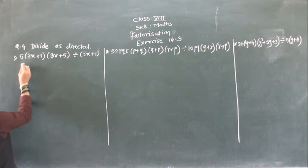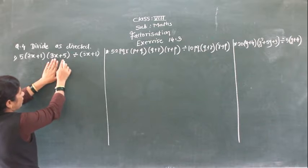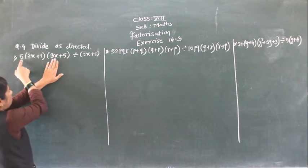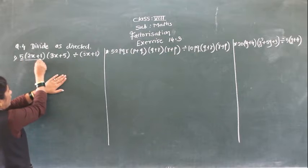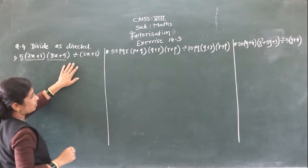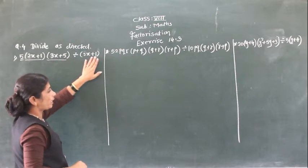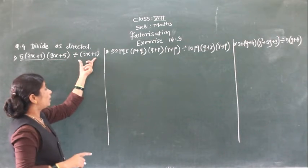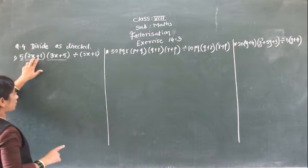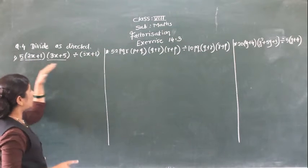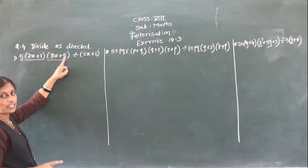So here, 5 bracket into (x plus 1) into (3x plus 5). This 5, this bracket, and this bracket are multiplied to each other. So in between this side is the multiplication, divided by (2x plus 1). If you see here, this (2x plus 1) is the factor here — 2x plus 1. So we can directly do this division.